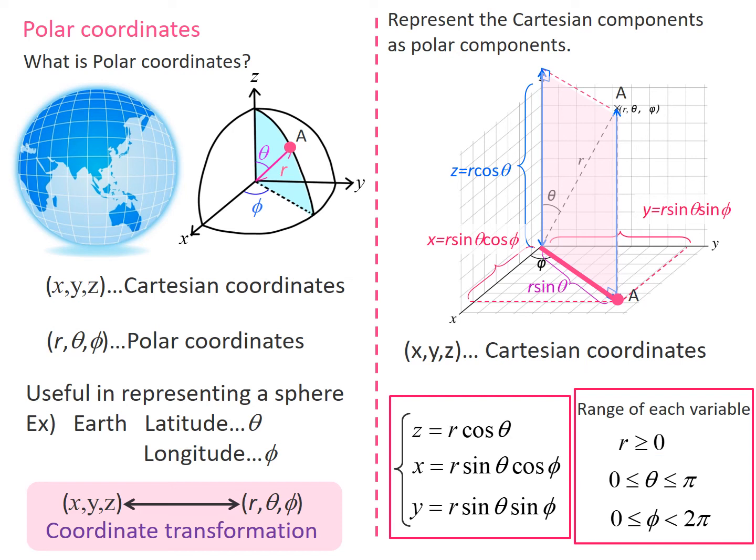Theta corresponds to latitude on Earth, but the latitude is defined as plus minus 90 degrees on Earth, whereas it is defined as an angle from the z-axis in polar coordinates, so it is defined as a value from zero to pi.